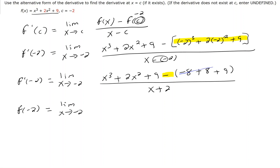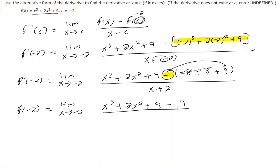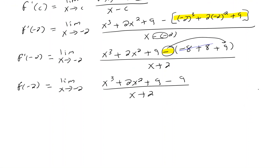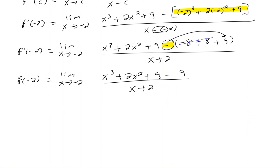So I rewrite x to the third plus 2x squared plus 9. This minus here will go to that positive 9, so negative times positive makes negative — minus 9. Now I can simplify a little bit more because 9 minus 9 is zero; they cancel.